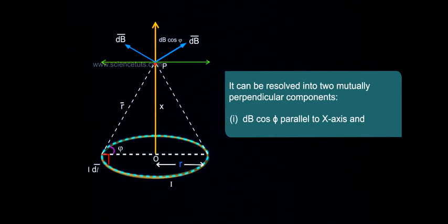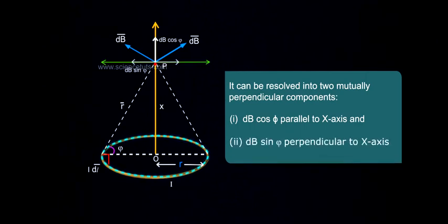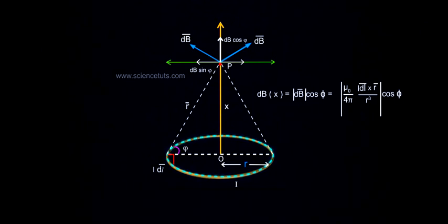1. dB cos phi parallel to x-axis and 2. dB sin phi perpendicular to x-axis. All dB sin phi components due to the diametrically opposite elements nullify each other, whereas the axial components dB cos phi add up. Therefore,